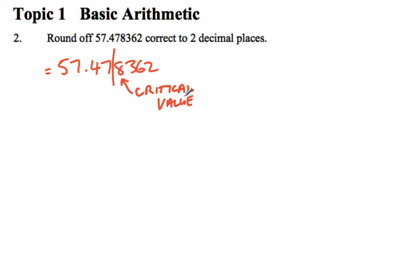then we'll raise the value of the 7 up by 1. So that's the rounding off process we go through there, 57.48. Because 8 here, this 8, is greater than 5—5 or more—that adds 1 to the 7 in the rounding up process.